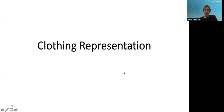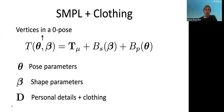Let's look at the clothing representation. We will see throughout the lecture different clothing representations based on vertex displacements, which we'll see in this lecture, based on implicit surfaces, which we'll see in the next lecture, and also based on points and neural feature points. Vertex displacements are perhaps the most basic and easiest representation.